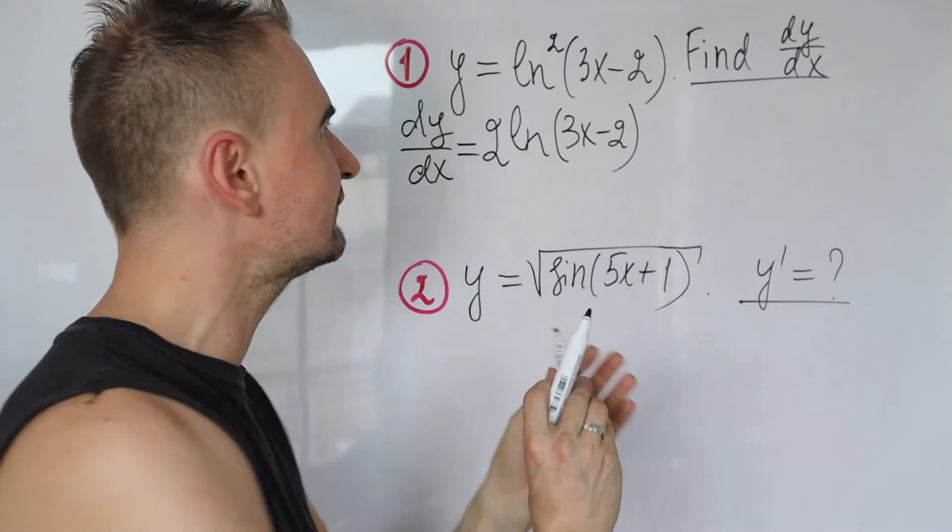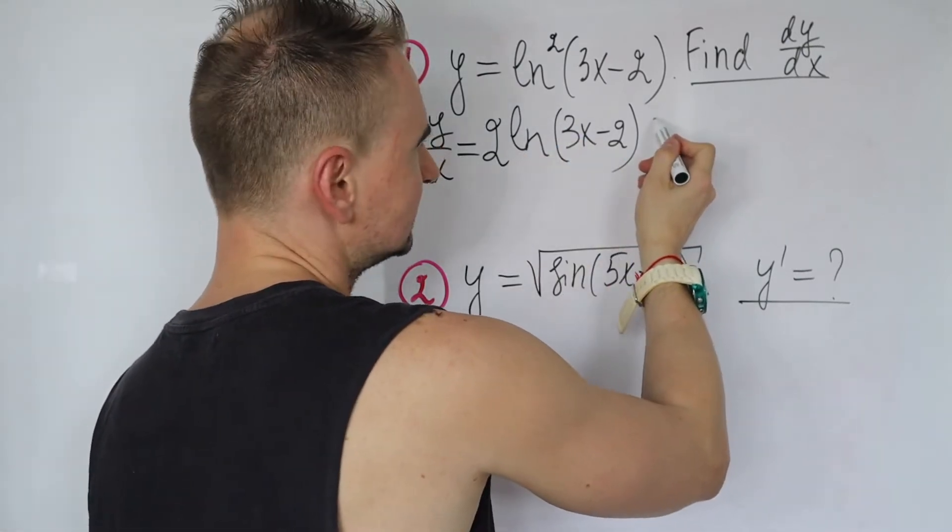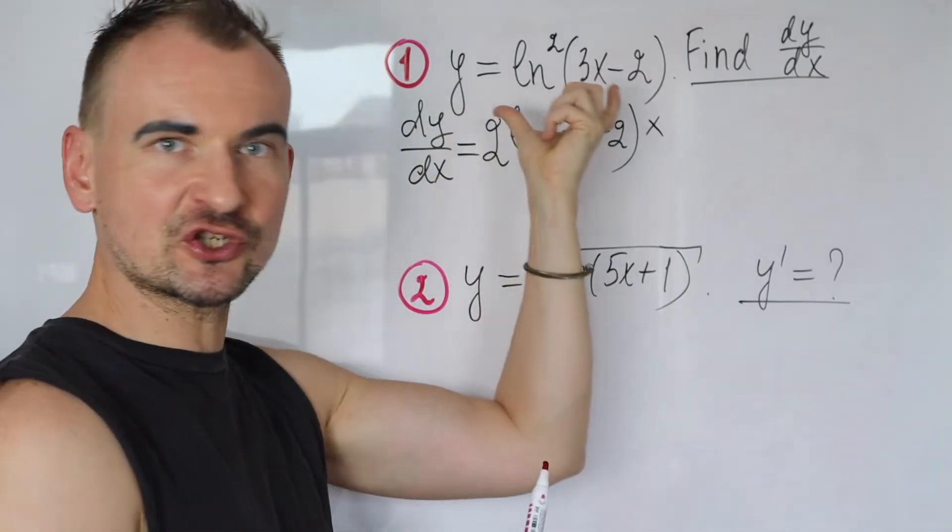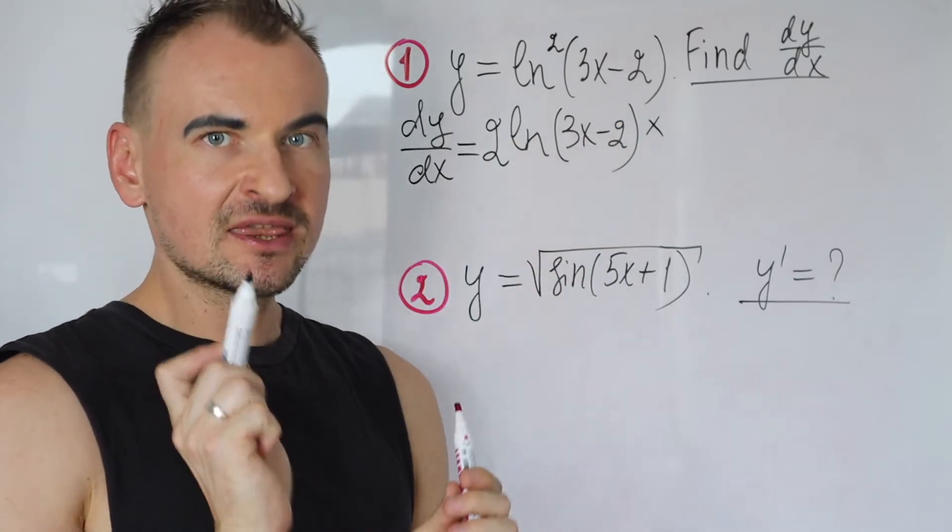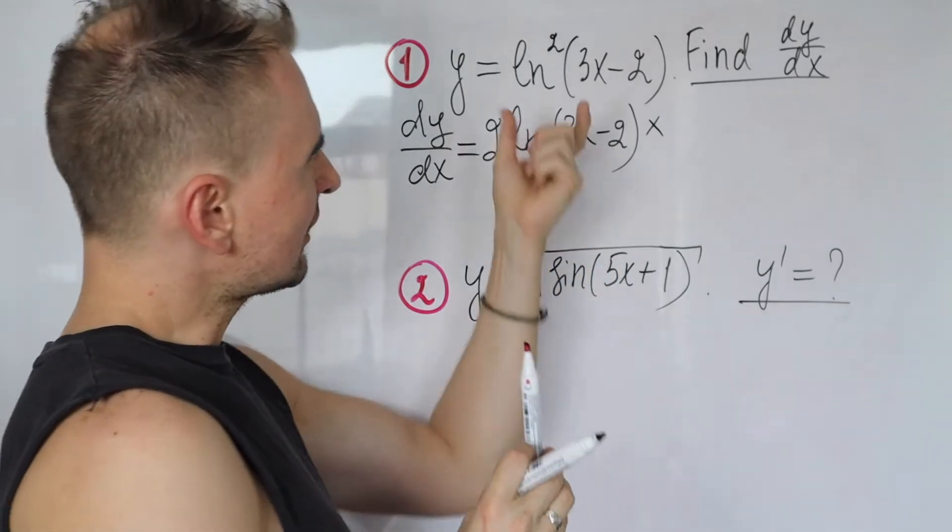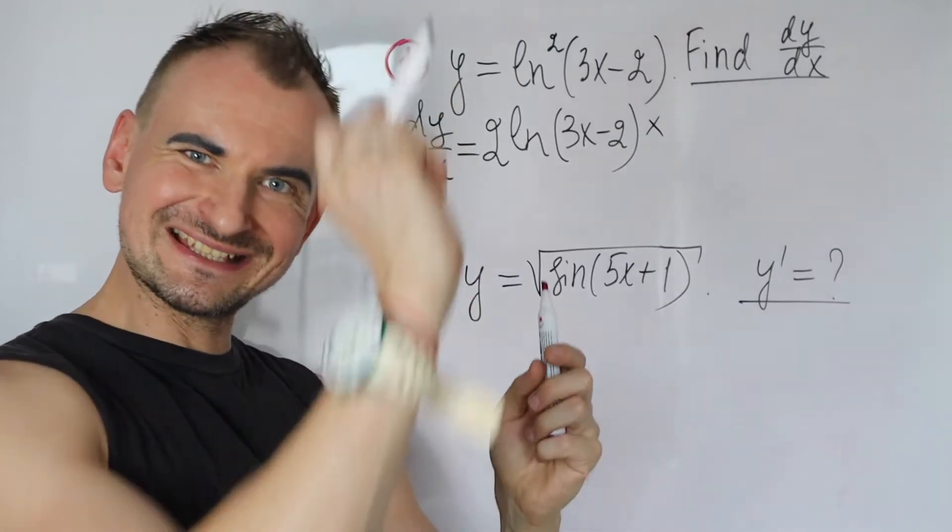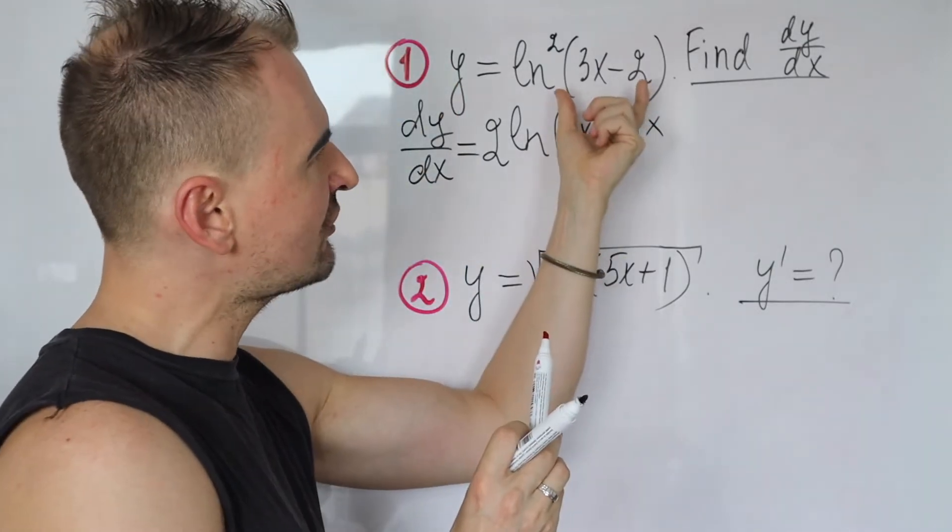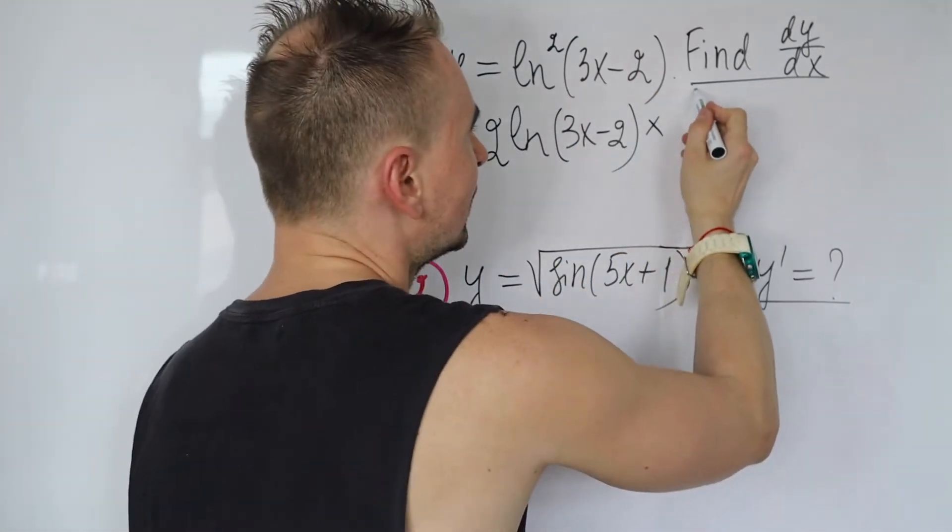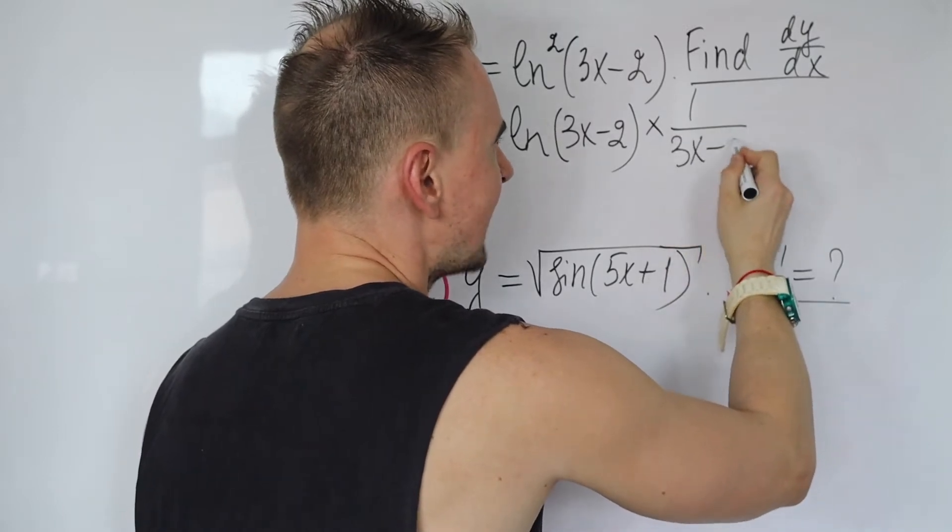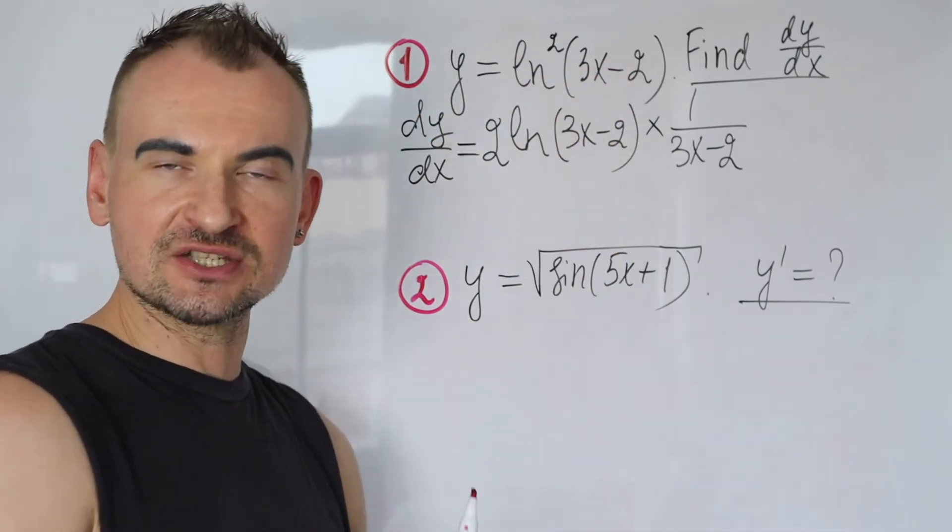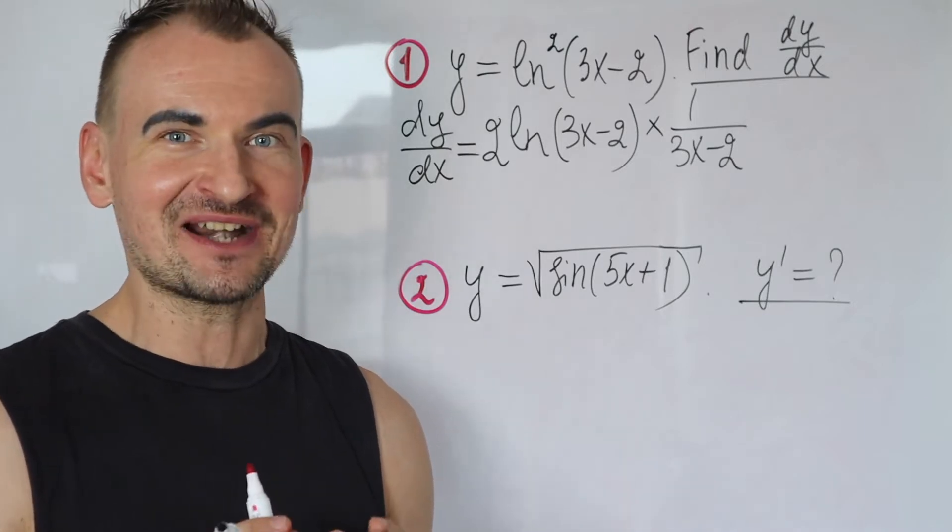Now we are not done yet because you have this composition function, this term gets multiplied. Right now what you have, ask yourself, you have natural logarithm. Think of table of derivatives - the derivative of natural logarithm is one over that argument. So your argument is not x, it's 3x minus 2. So one over 3x minus 2, this is the derivative of natural logarithm of 3x minus 2.